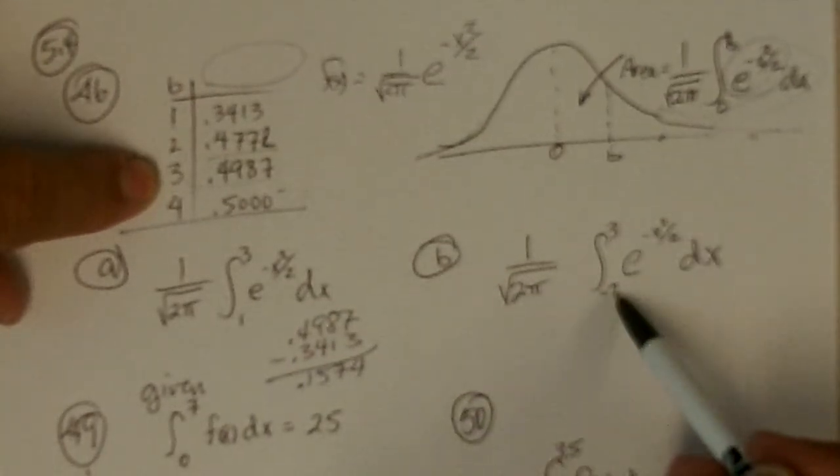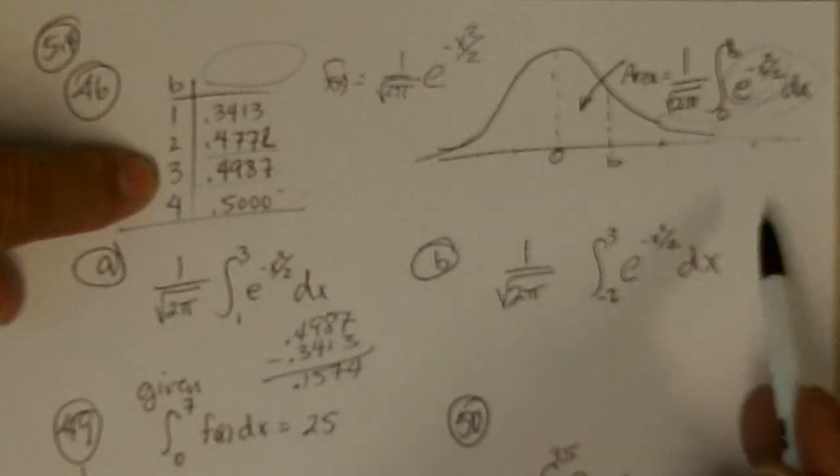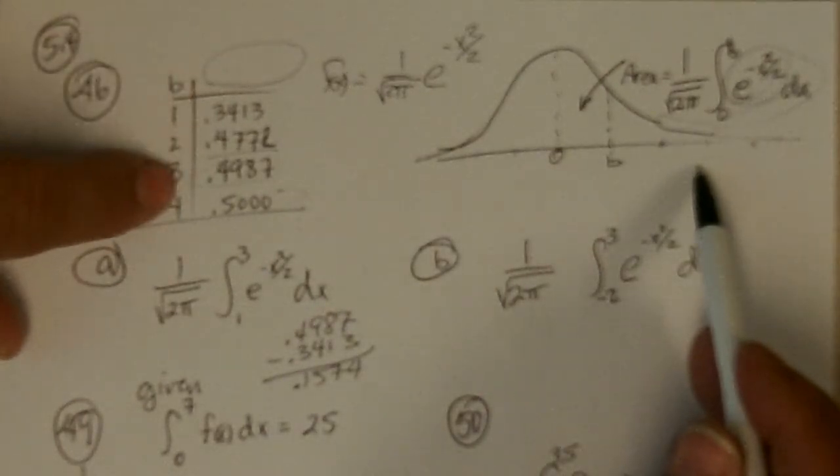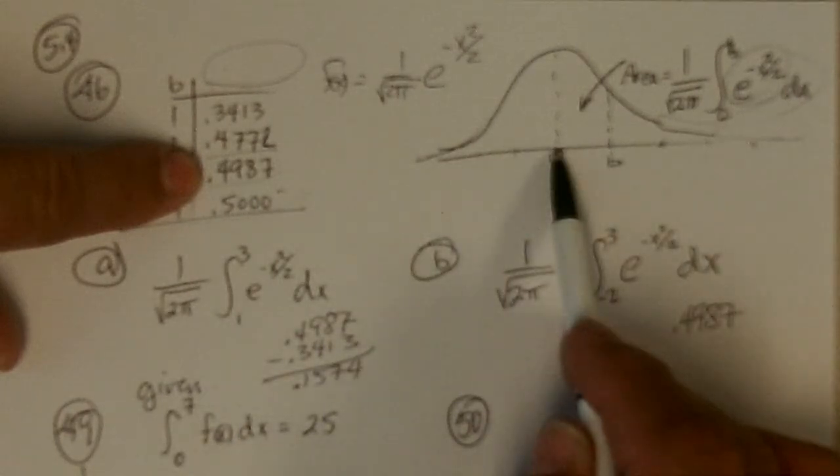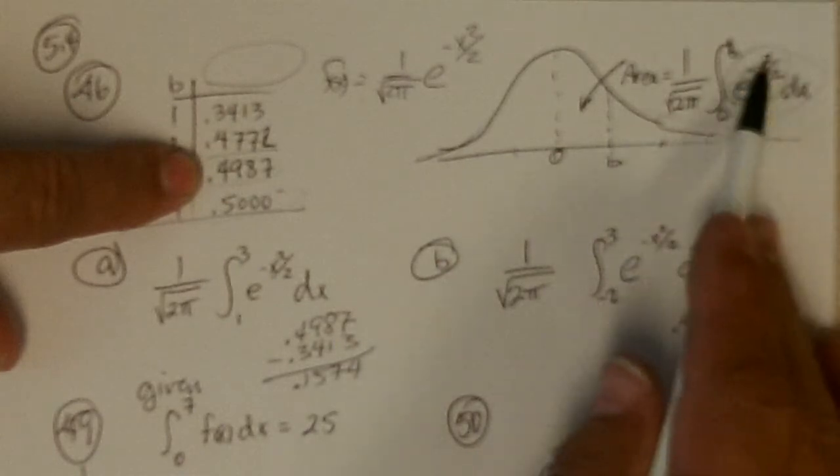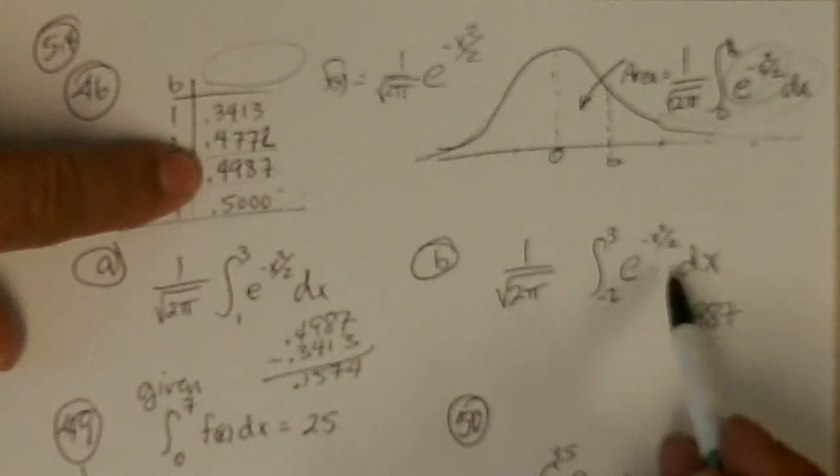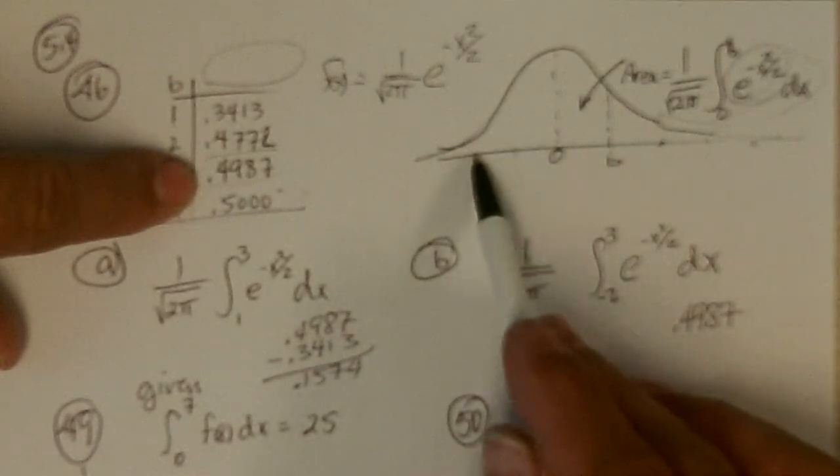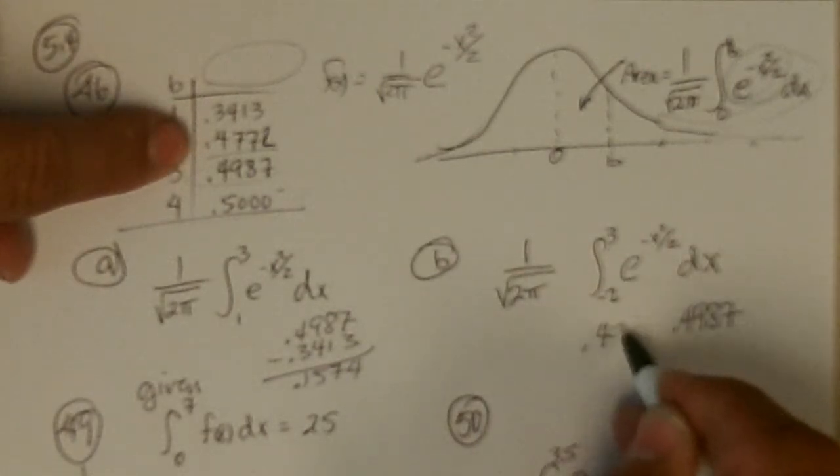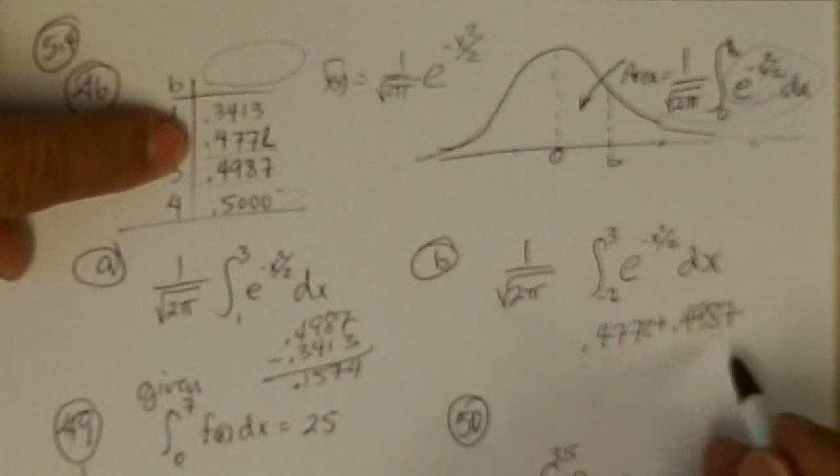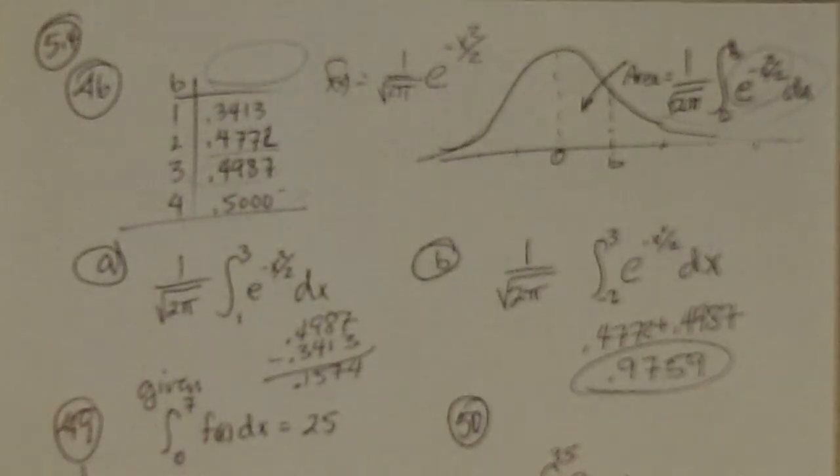And this one says the area from minus 2 to 3. Well, from 0 to 3 is this. But from negative 2 to 0 is the same area, since this is symmetric, it's x squared, so it's got to be symmetric. From minus 2 to 0 is the same from 0 to 2, so we've got to add to this the area of 0.4772. So we get 0.9759. That's how you do those.